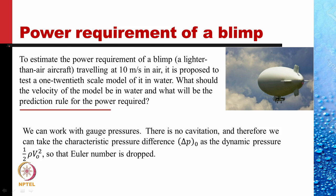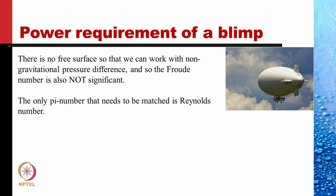Since we are working in atmosphere, we can work with gauge pressures. There is no cavitation involved, so we take the characteristic pressure difference delta p as the dynamic pressure — the stagnation pressure minus the static pressure, that is one half rho V naught squared — so the Euler number is dropped from consideration. There is no free surface, so we can work with non-gravitational pressure difference, and thus the Froude number is also not significant.